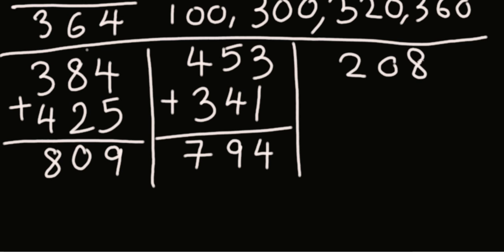208 plus 342. So 200, 500, this is 0, so 540. And you see the complements 8 and 2, 10, so 550.